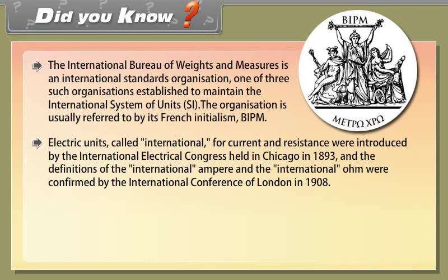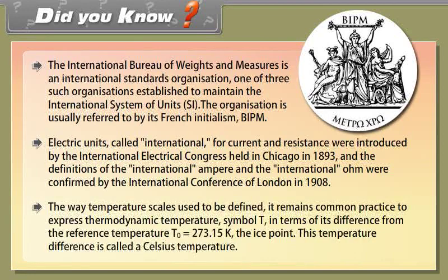The way temperature scales used to be defined, it remains common practice to express thermodynamic temperature, called T, in terms of its difference from the reference temperature T0 is equal to 273.15 Kelvin, the ice point. This temperature difference is called a Celsius temperature.